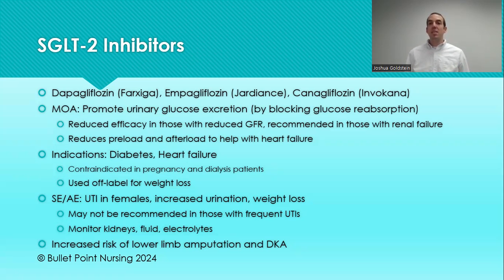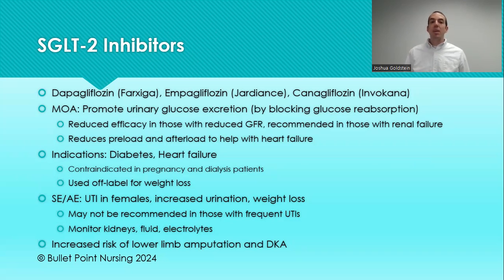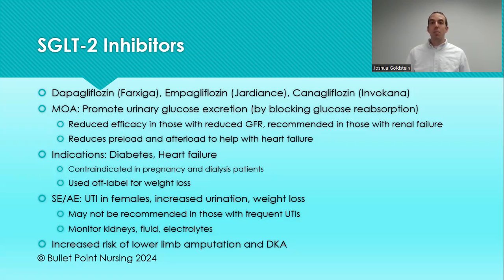Most guidelines prefer GLP-1s, though some consider GLP-1s and SGLT2 inhibitors equal second choices. A major issue to be aware of: in females, SGLT2 inhibitors are known to cause UTIs and increased urination — because more glucose in urine draws water with it. They may not be recommended in patients with frequent UTIs. Because of the diuretic effect, carefully monitor kidneys, fluid status, and electrolytes. This medication also has documented increased risk of lower limb amputation and diabetic ketoacidosis.